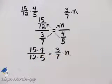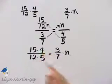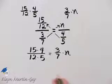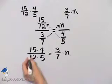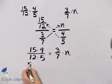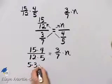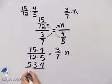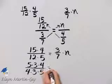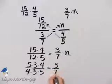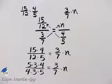5 and 15 have a common factor of 5, and 4 and 12 have a common factor of 4. So I'll write 15 as 5 times 3, and then my 4. I'll write 12 as 4 times 3, and then times 5. And I still have 3 sevenths times n.